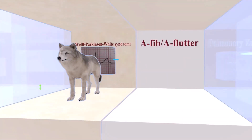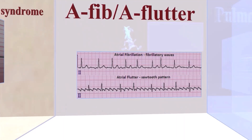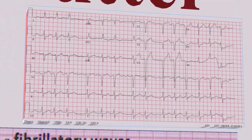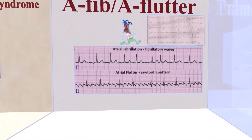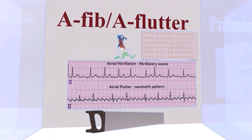In this room, we talk about AFib and AFlutter — atrial fibrillation and atrial flutter. In atrial fibrillation, we see irregularly irregular waves with no discrete P waves, since the P wave represents atrial depolarization. Atrial flutter has a classic sawtooth pattern, caused by rapid succession of identical consecutive atrial depolarization waves producing the sawtooth appearance.